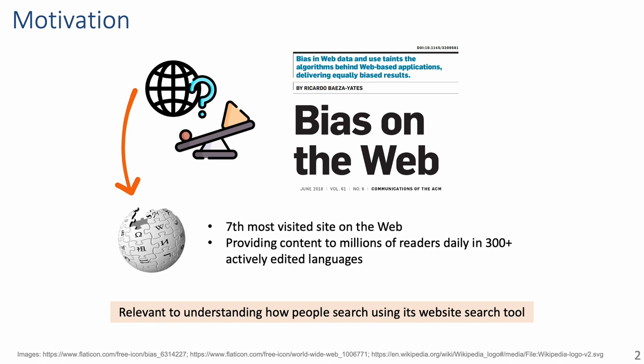Let's start with our motivation. Extensive research over recent years has recognized the importance of studying the existence and impact of biases on the web and its search process. In particular, in this work, we focus on one of the most visited sites on the web, Wikipedia, which is the world's largest open encyclopedia, providing content to millions of readers across the globe in more than 300 actively edited languages.